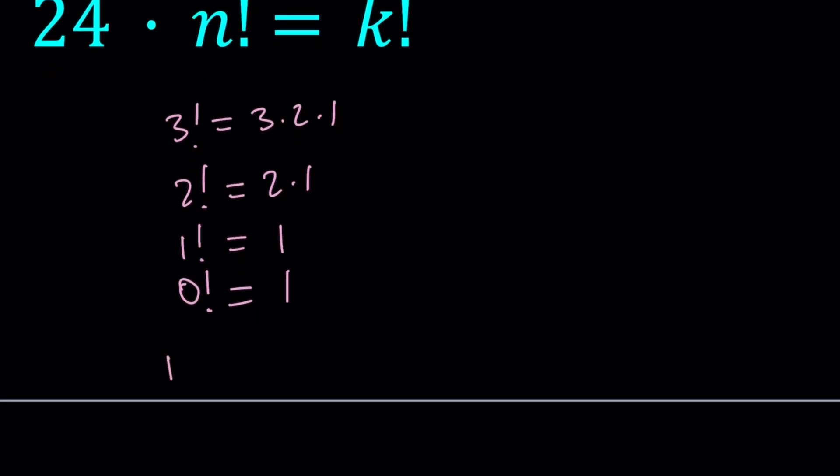In general, n factorial can be written as n times n minus 1 factorial. So basically, the product of all numbers 1 through n is given as n factorial, and you can use this formula to reduce or simplify factorials.